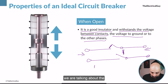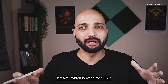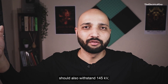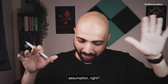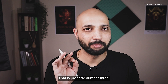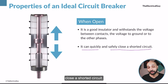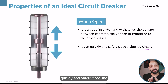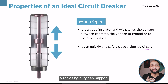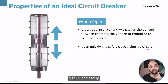Property 3 refers to the rated voltage of the system. A circuit breaker rated for 52 kV should not be expected to withstand 145 kV — that would be the wrong assumption. Now Property 4: when in the open condition, the circuit breaker can quickly and safely close onto a shorted circuit. If there is an existing fault, the circuit breaker should be able to quickly and safely close its contacts — reclosing duty can happen — and it must do so quickly and safely.